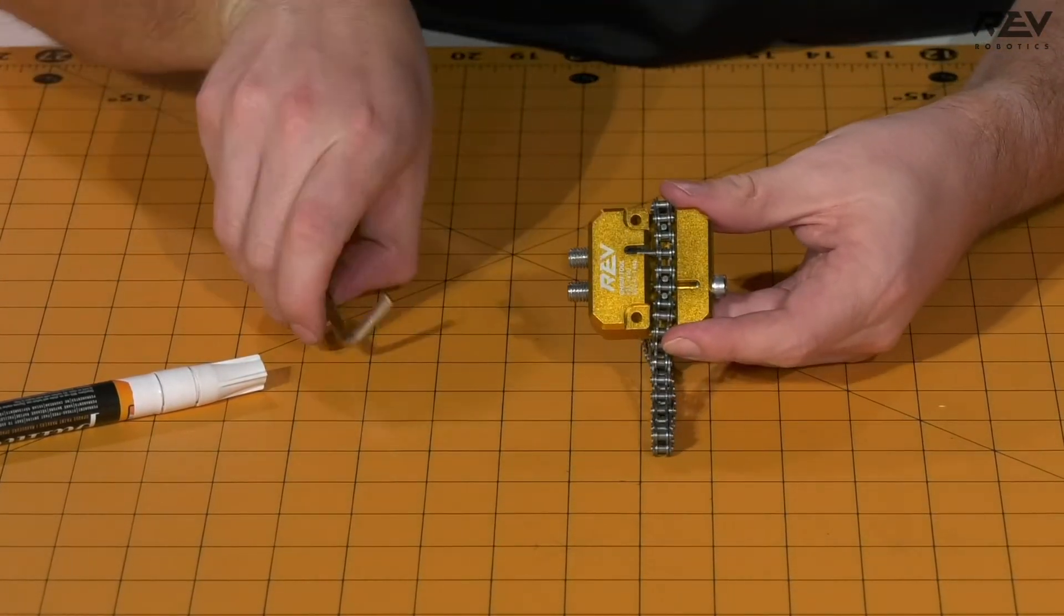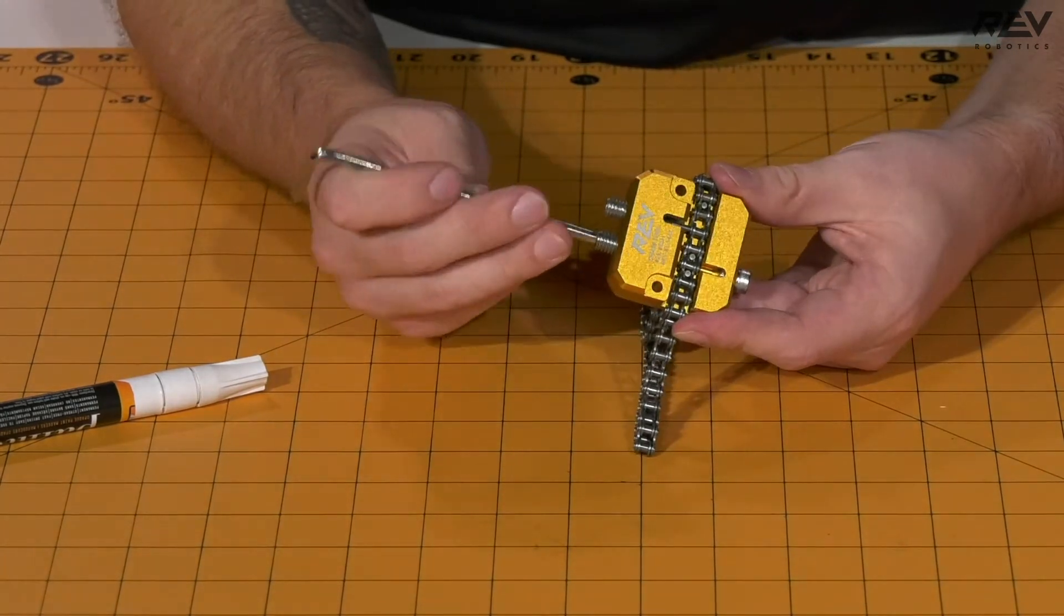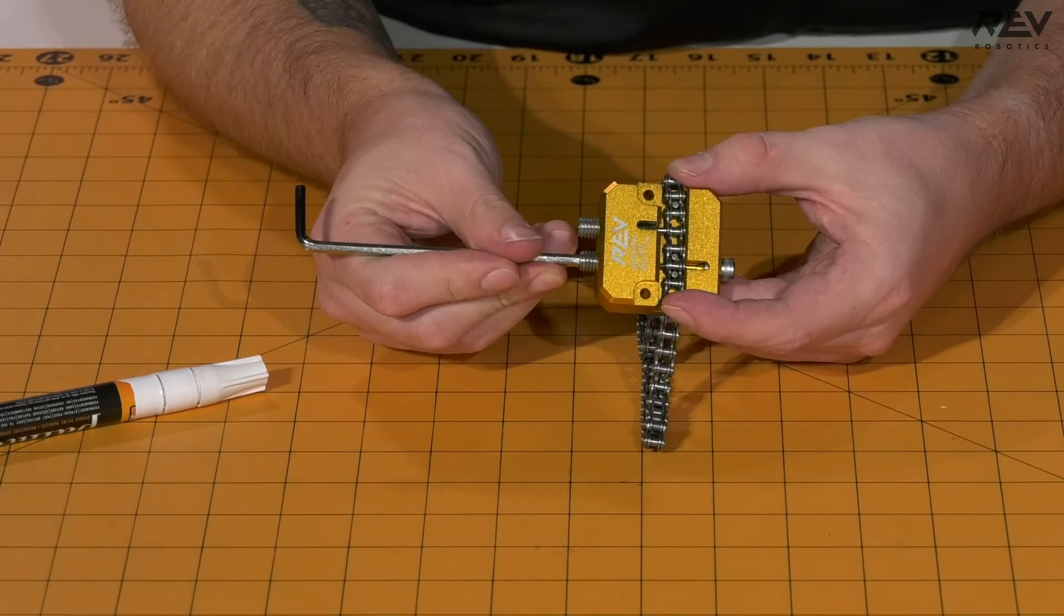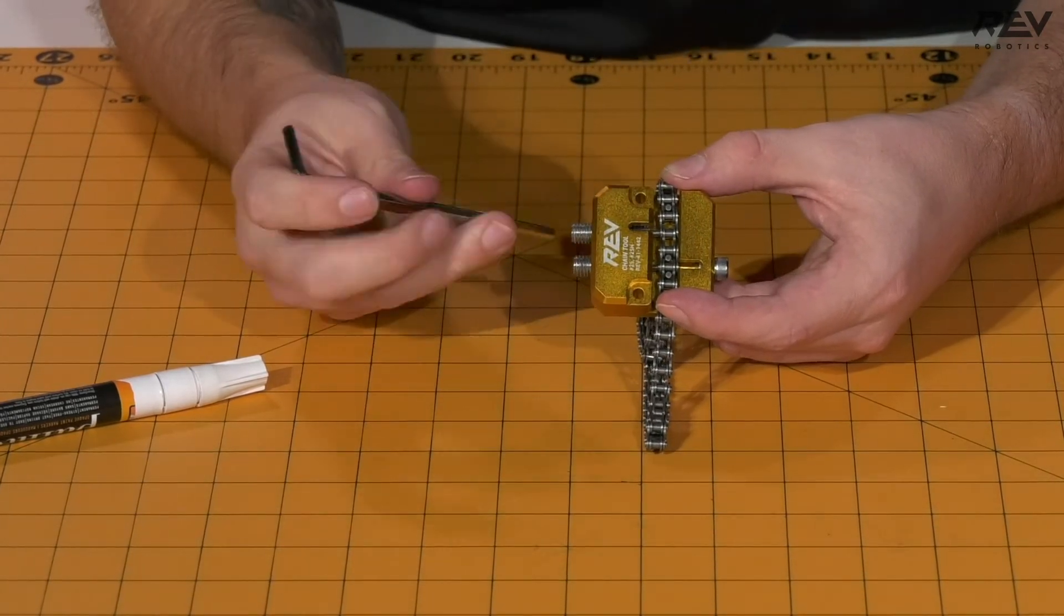Once those are set, I tend to like to take the pin set screw and just tighten that down just a little bit. Not a ton, just enough for it to be able to make some contact to help hold the chain in place.